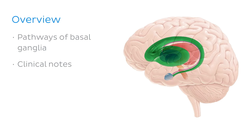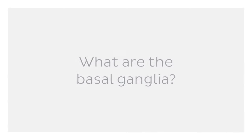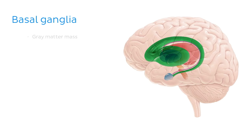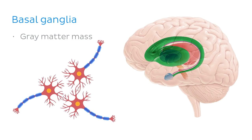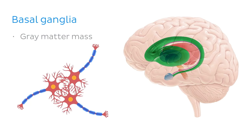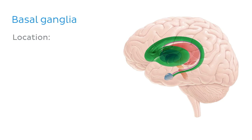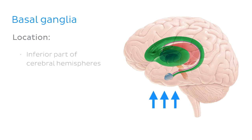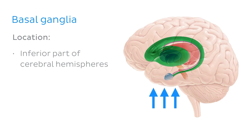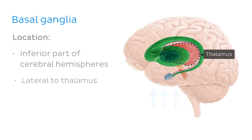That's a lot to cover, so let's waste no time and ask the question: what are the basal ganglia? The word ganglion means a grey matter mass, which is formed by collections of neuronal cell bodies. These masses of grey matter are located deep in the central nervous system, in the inferior part of the cerebral hemispheres, lateral to the thalamus.